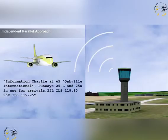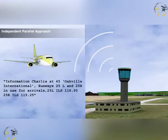As early as possible after an aircraft has checked in with approach, the aircraft will be advised that parallel runway operations are in progress. The runways to be used will be identified and the ILS or MLS frequencies will be passed to the pilot by means of terminal voice broadcasts.